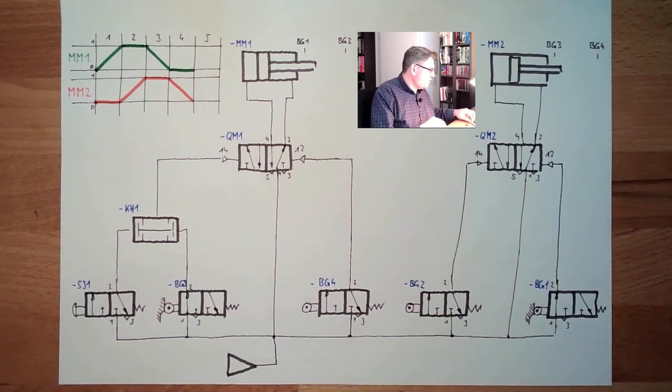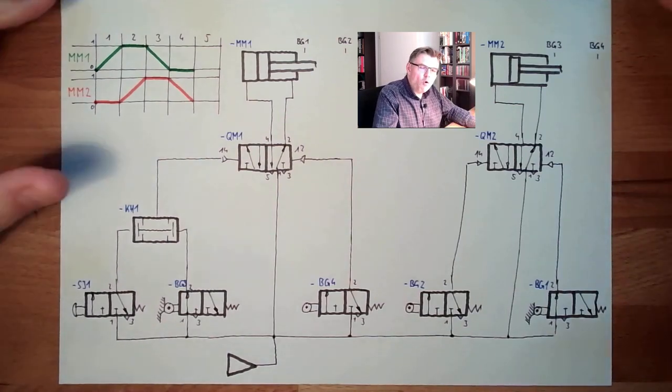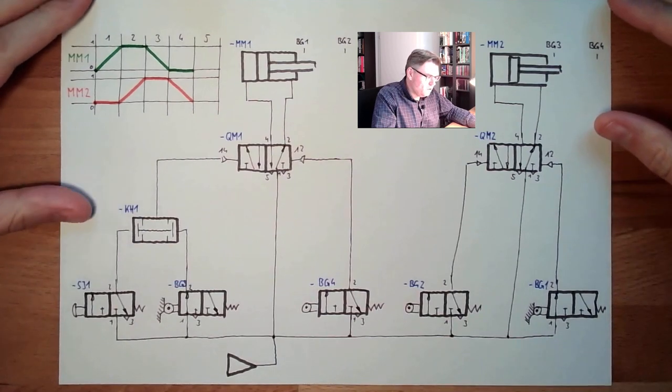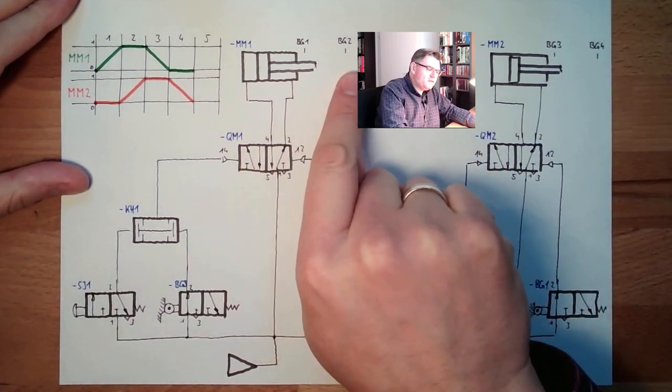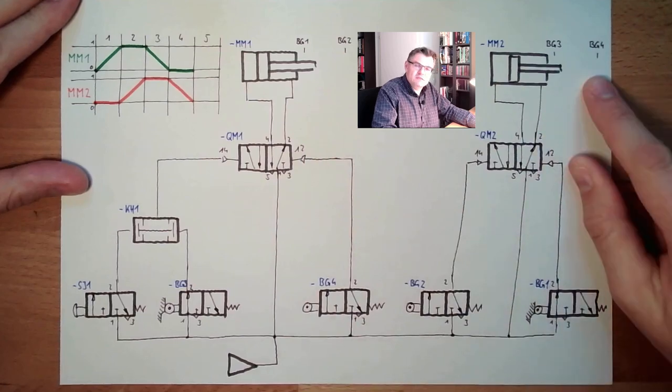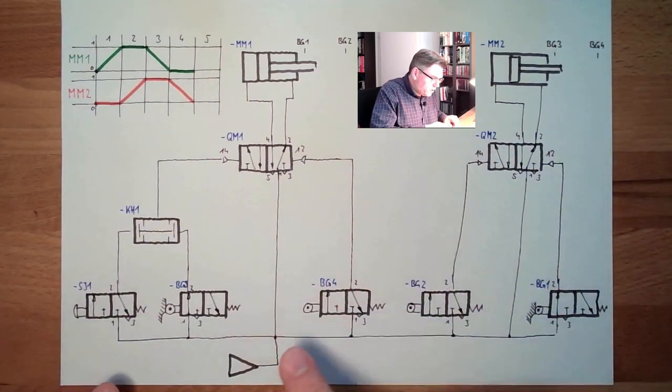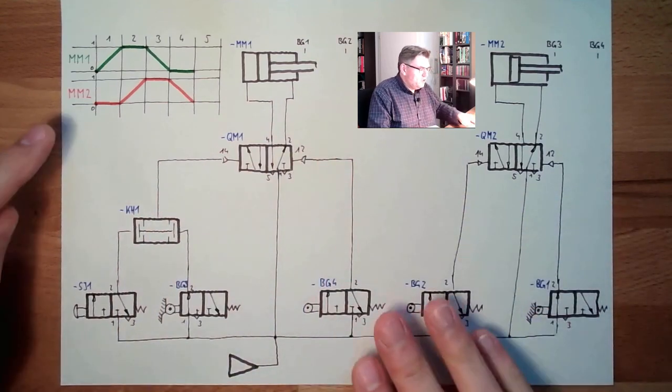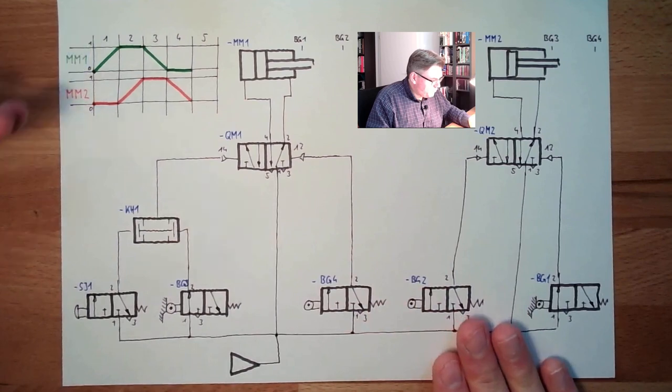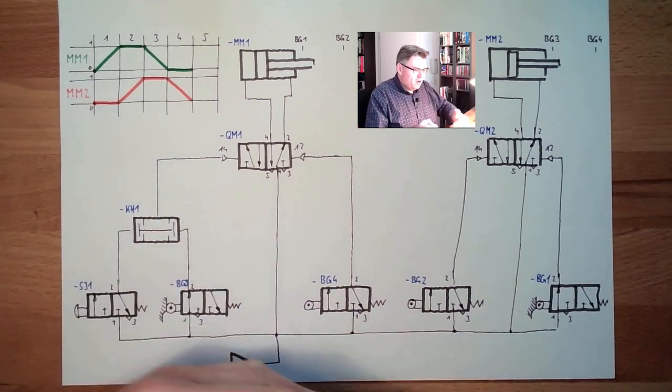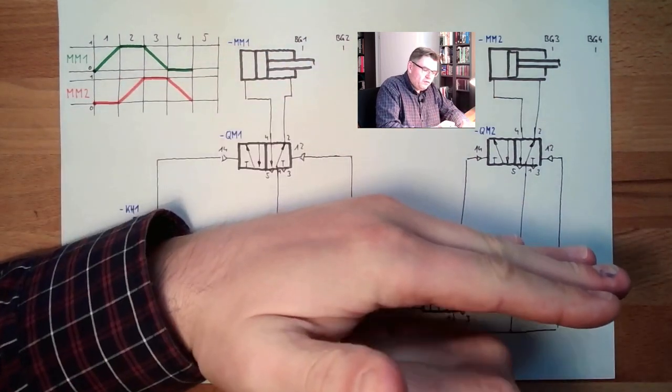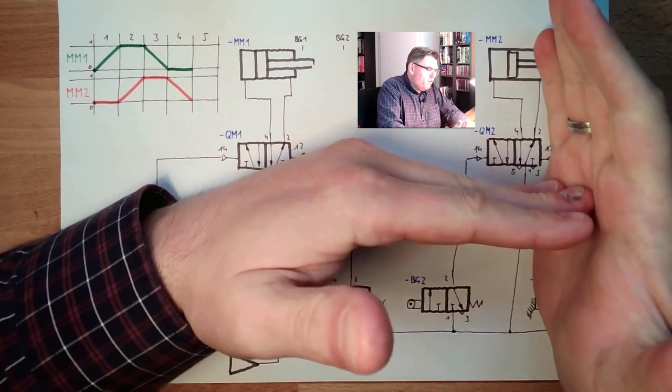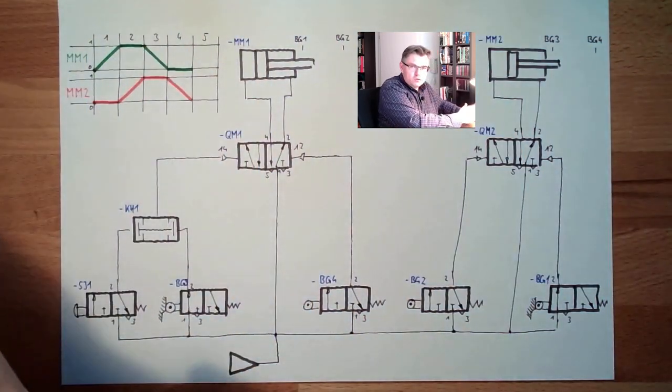This is what is going to happen. Both cylinders are traveling in a coordinated way. Each action of a cylinder is triggering the next action. Due to the connections of the valves, it is doing exactly that. We could imagine, for instance, this first cylinder is pushing something out of a magazine.